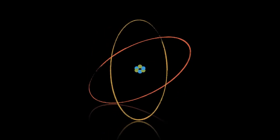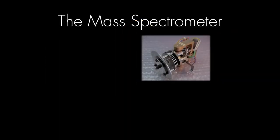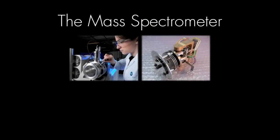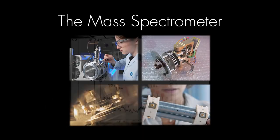Welcome to subtopic 2.2, the mass spectrometer. The mass spectrometer is a vital instrument in many kinds of chemical analysis. But how does it work, and how do we interpret the data that we get from it?